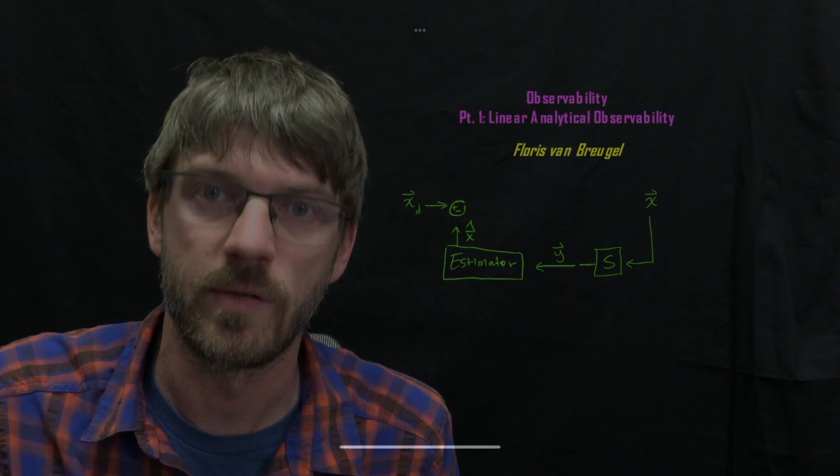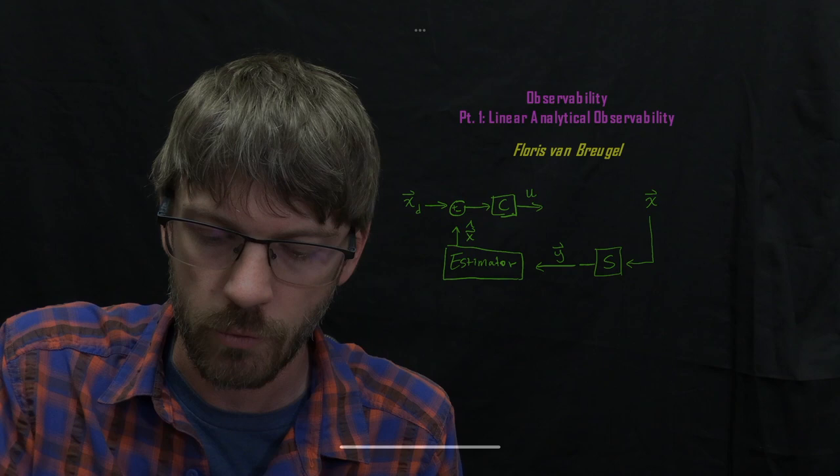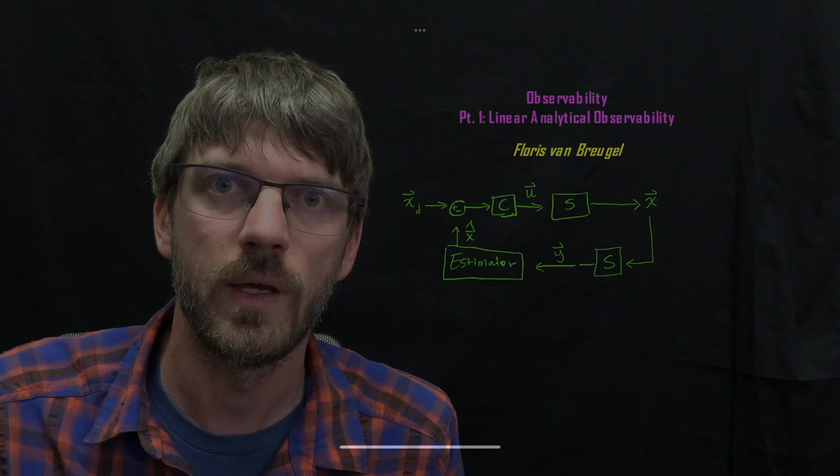And what we'll do in our control system is we'll then compare x hat to the desired value of x and use that difference, that error, to determine some control values based on some controller that we may have designed. We'll call those control values u. And those will go into some description of the dynamics for our system, ultimately leading to the actual state output.